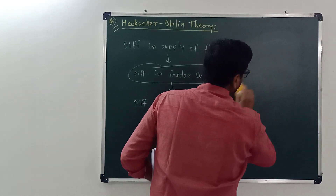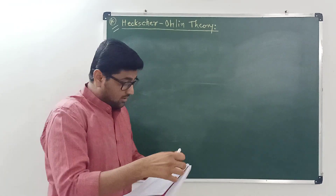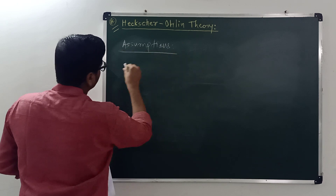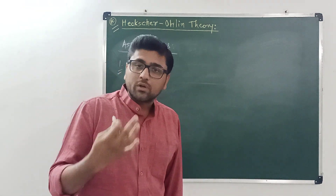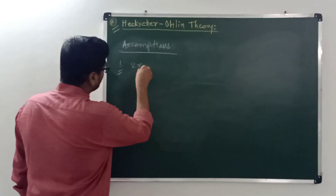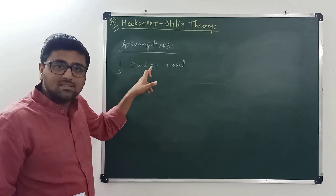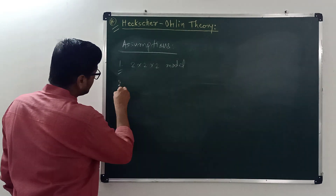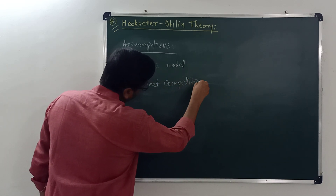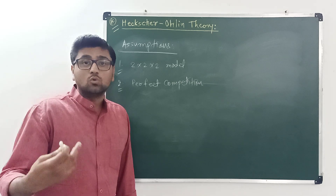There are certain assumptions which are very important for this theory. First, this theory assumes that there are two nations, two commodities, and two factors of production — that is why this theory is known as the 2x2x2 model. Second, this theory assumes perfect competition, meaning there are many buyers and many sellers of these two goods and the goods are homogeneous.